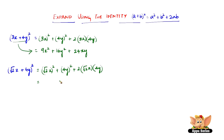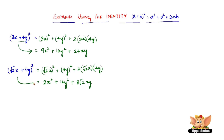Root 2x the whole square is root 2 into root 2, which is 2, and x into x is x squared, so 2x squared. Plus 4 into 4 is 16y squared. Plus 2 into root 2 is 2 root 2, and 2 root 2 into 4 is 8 root 2, and x into y is xy. So the expansion of root 2x plus 4y the whole square is 2x squared plus 16y squared plus 8 root 2 xy.